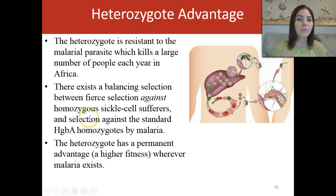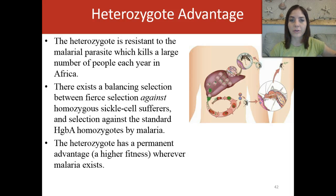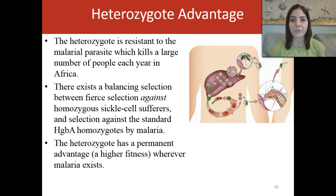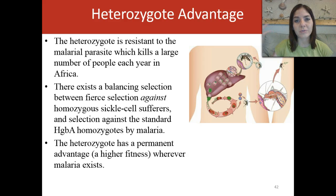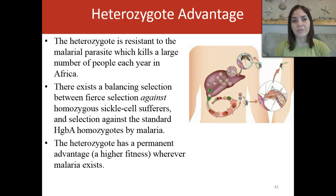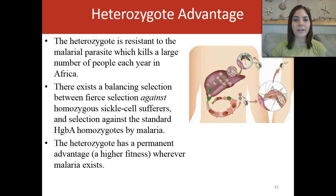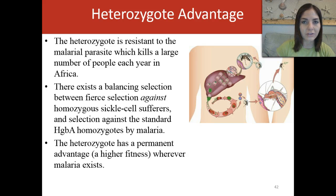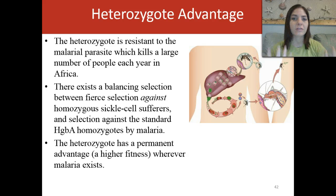Being homozygous normal — having regular disc-shaped red blood cells — is disadvantageous if you live in an area with a high frequency of malaria. On the other end, if you are homozygous recessive and have sickle cell disease completely, you're also going to die off because you'll be very sickly. So having that heterozygote advantage — being a carrier where some blood cells are normal and some are sickle — is going to serve a large purpose.